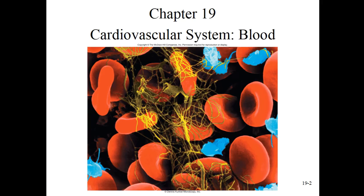Chapter 19: the cardiovascular system. We can see blood at the very high microscopic level. This is a false color scanning electron microscopy. It shows us platelets in blue, red blood cells — these little bagel-shaped ones — and then the formation of a blood clot, fibrin, shown as this yellow string.